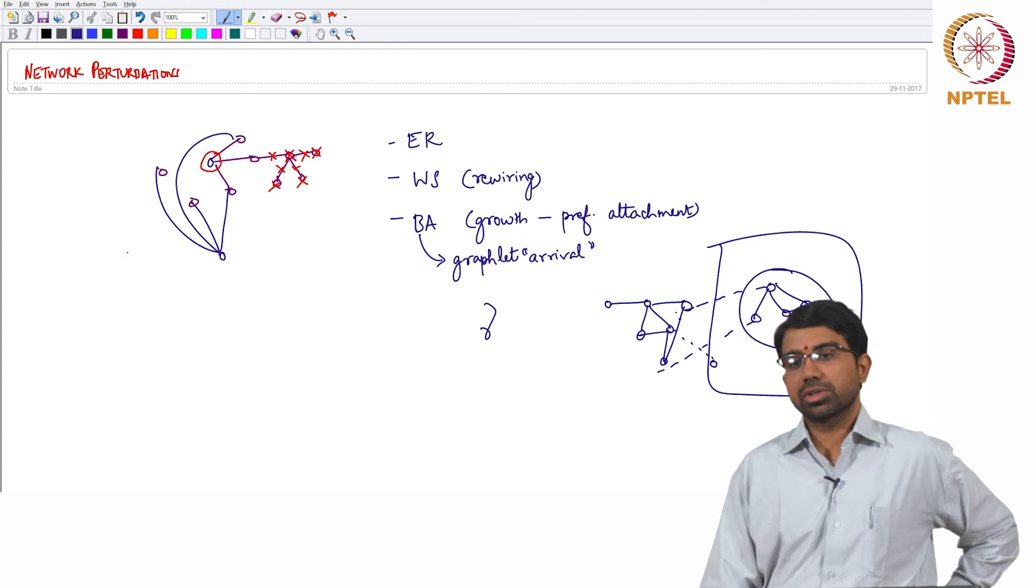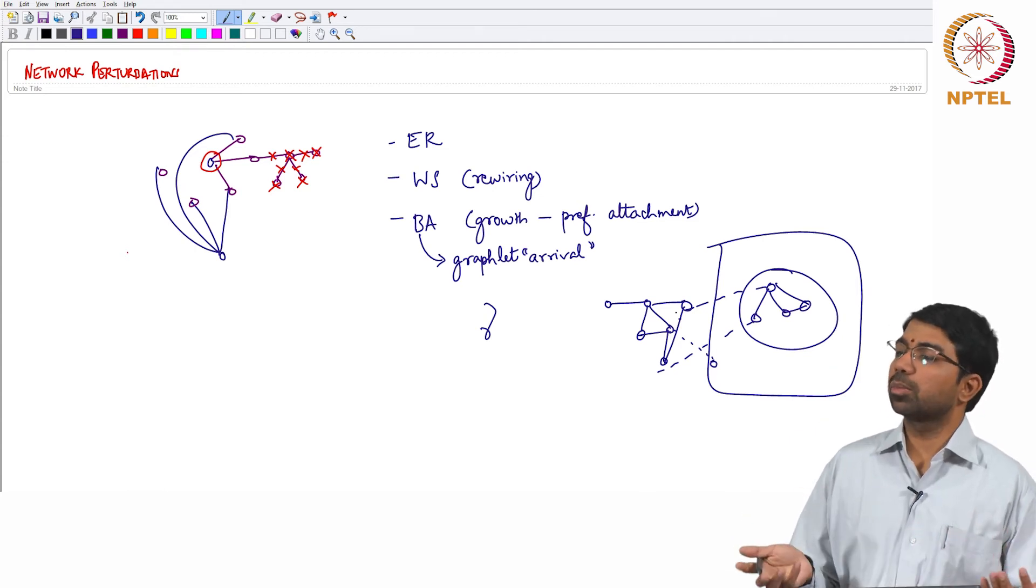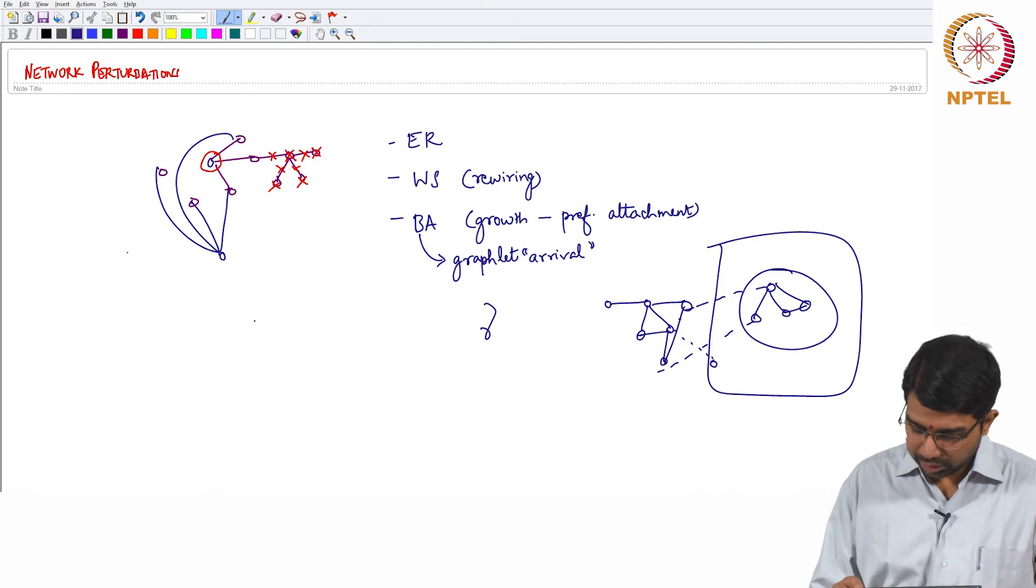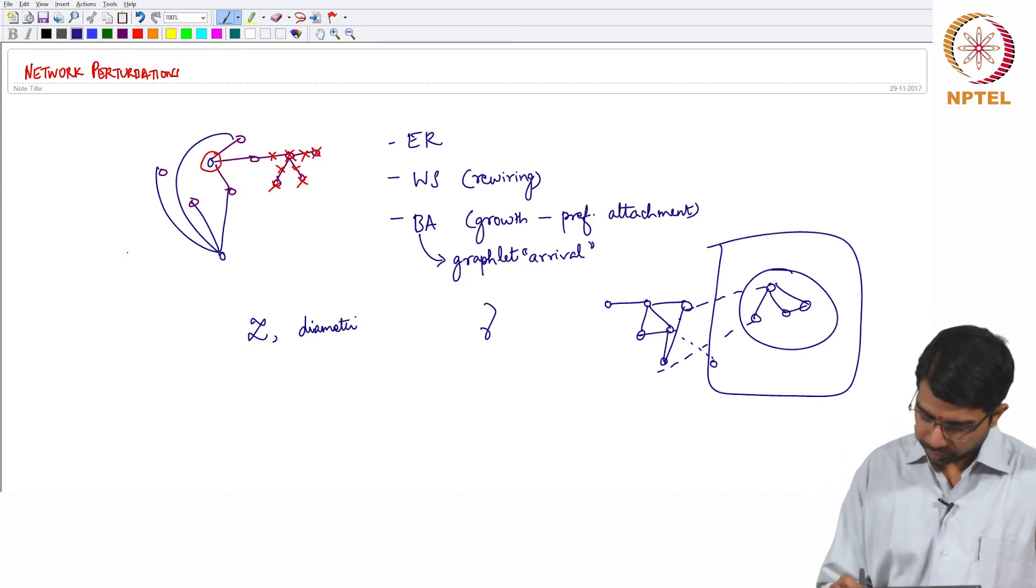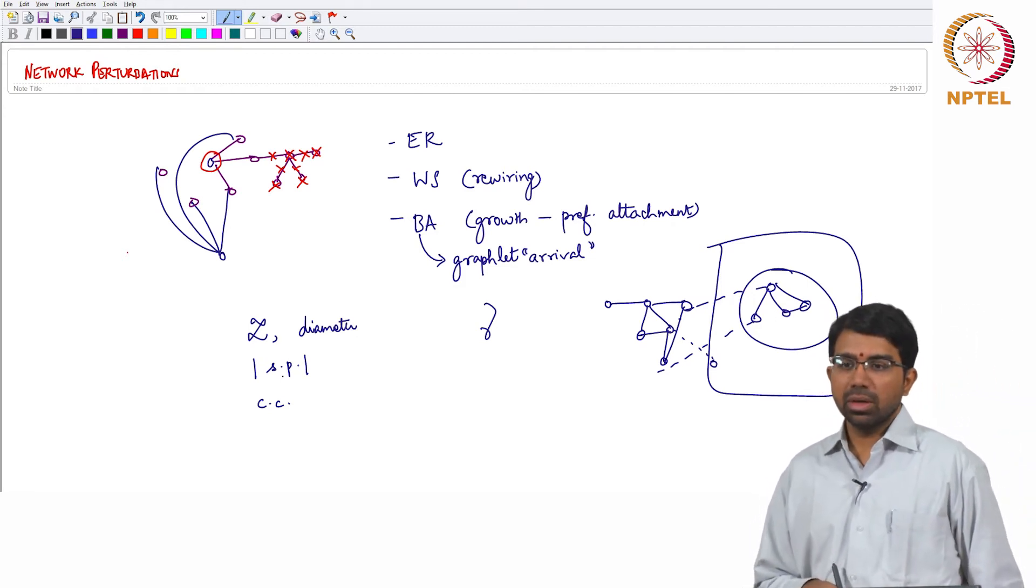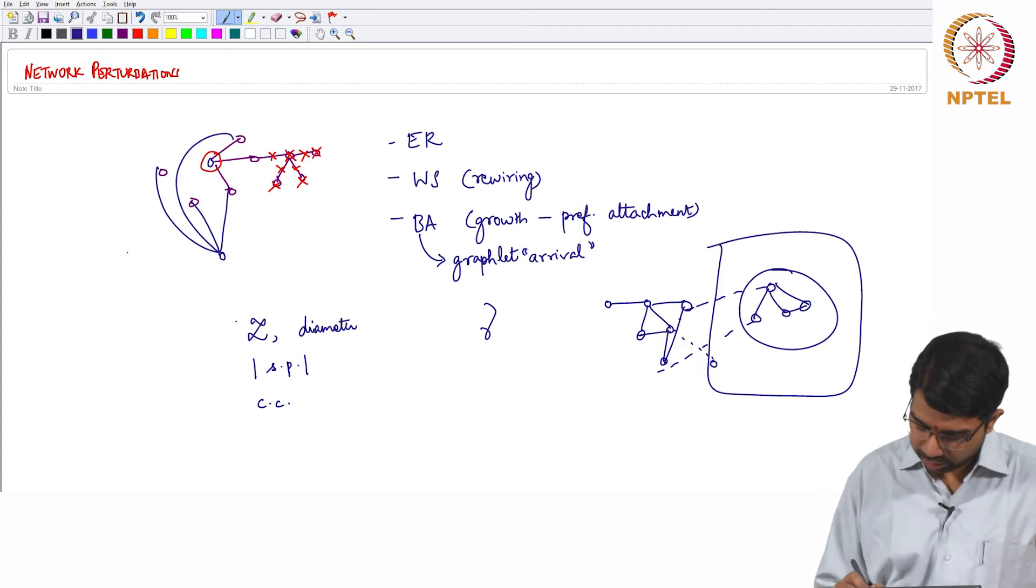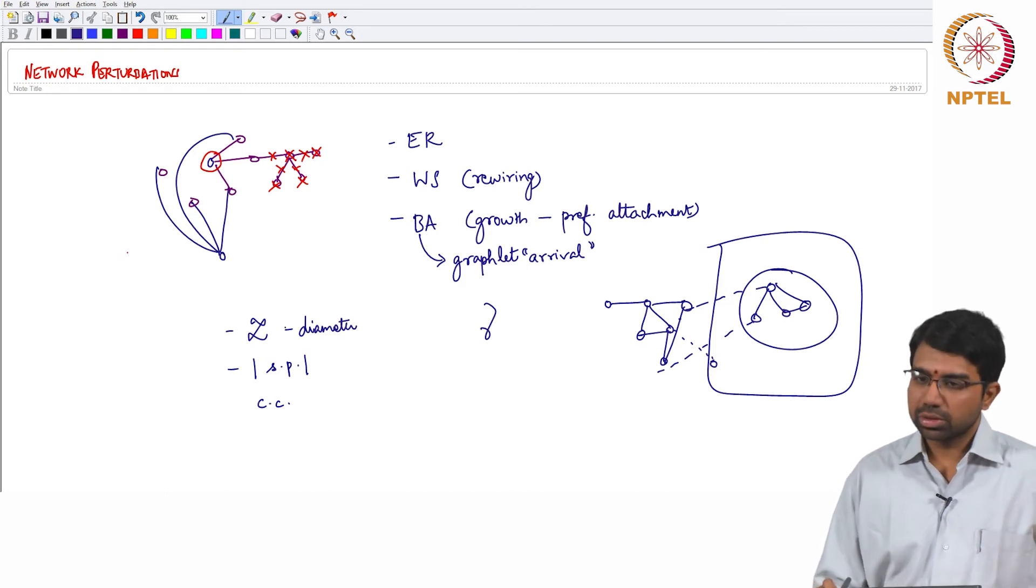So how do you quantify network perturbations? We have a network perturbation, how do we go about quantifying the perturbation? You can study most of the properties that we have studied so far, but you might want to start with characteristic path length, diameter, another useful metric is number of shortest paths. You can of course look at clustering coefficient, centrality measure, so on and so forth. You can study the perturbations to a network in many different ways. But the most useful, most commonly used methods are these.